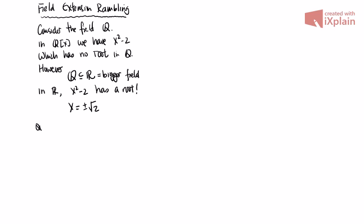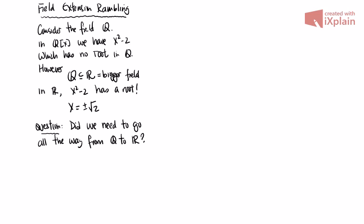Now there's a question before we look at the next example: did we really need to go all the way to R? In other words, going from Q to R — could we have gotten a bit bigger than Q but not all the way? So is there some field E with Q ⊂ E ⊂ R (strict containments) in which there's a root? Because maybe that's doing a better job — we don't have a root in Q so we go to R, but could we have just gotten a bit bigger?